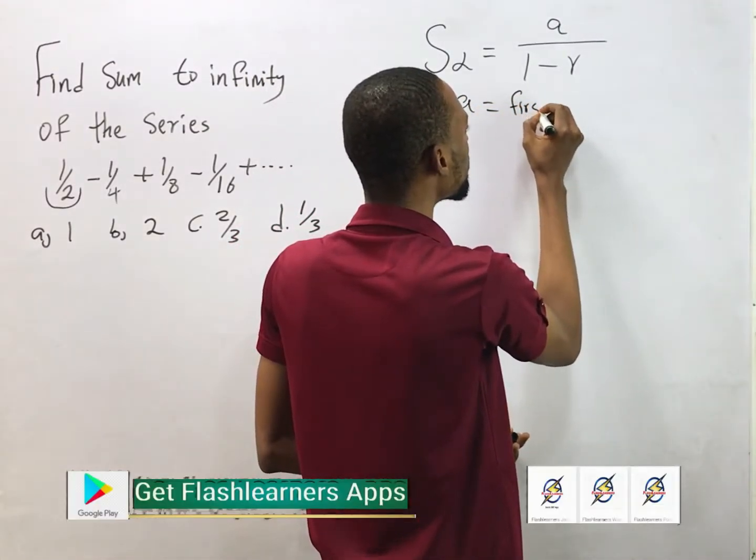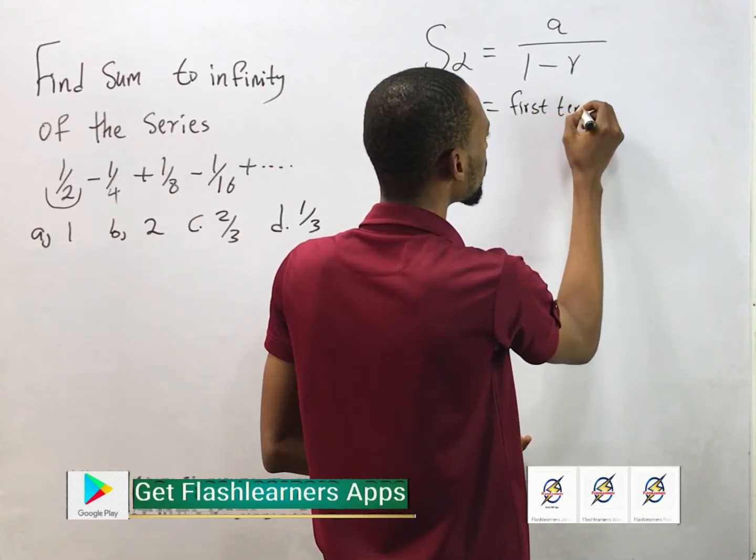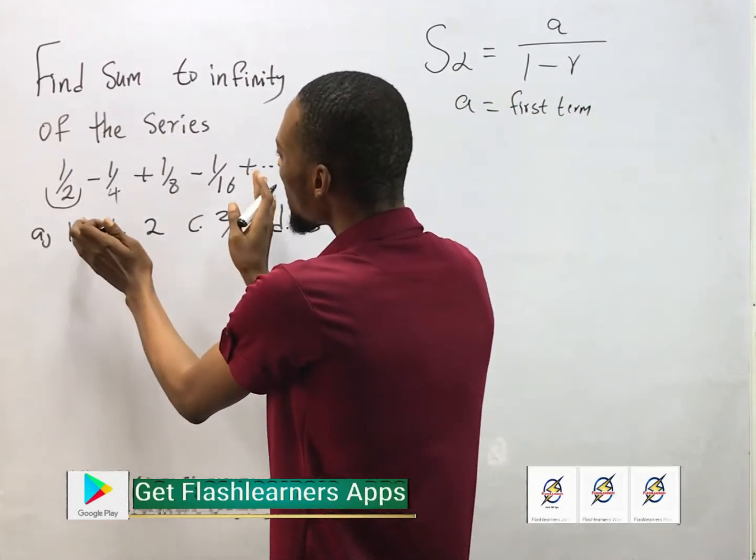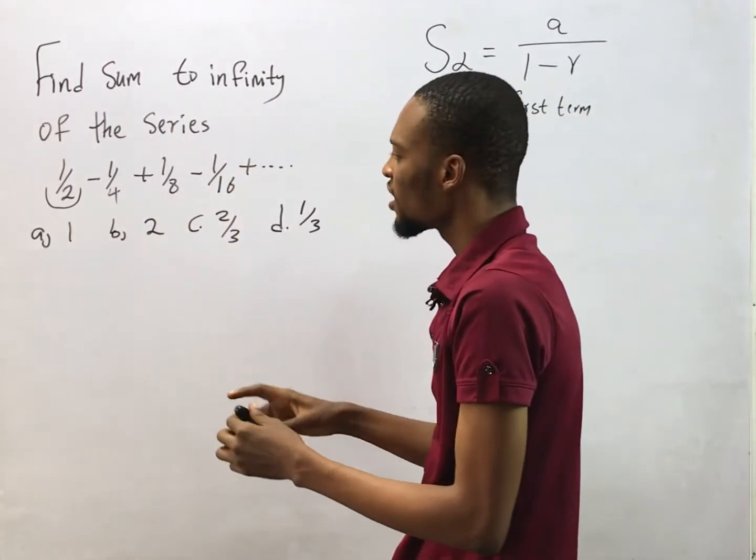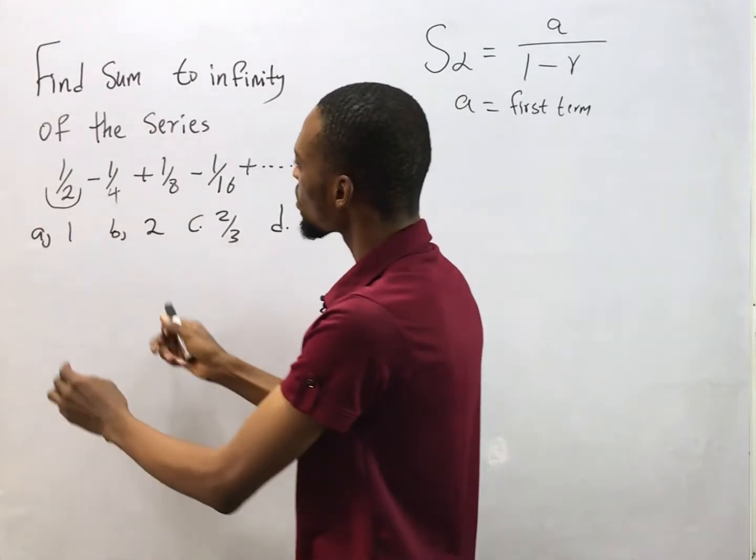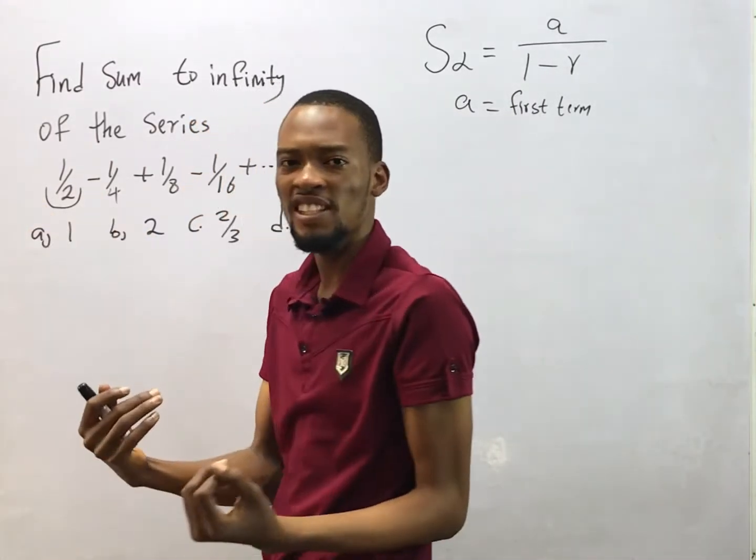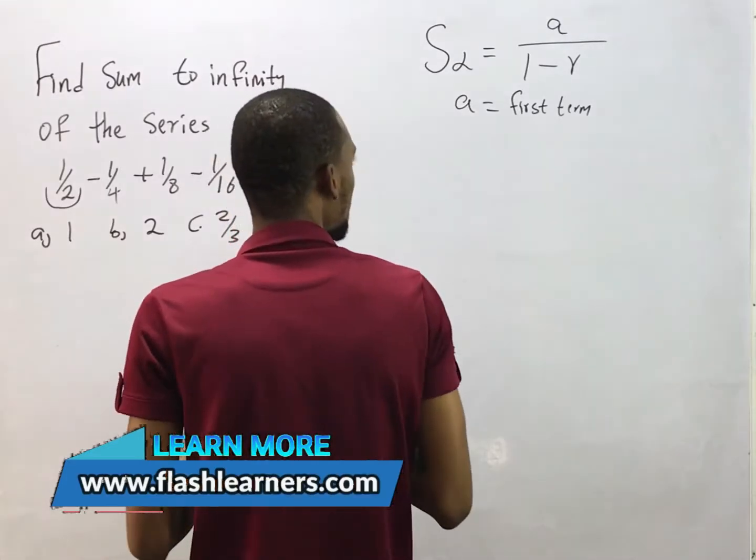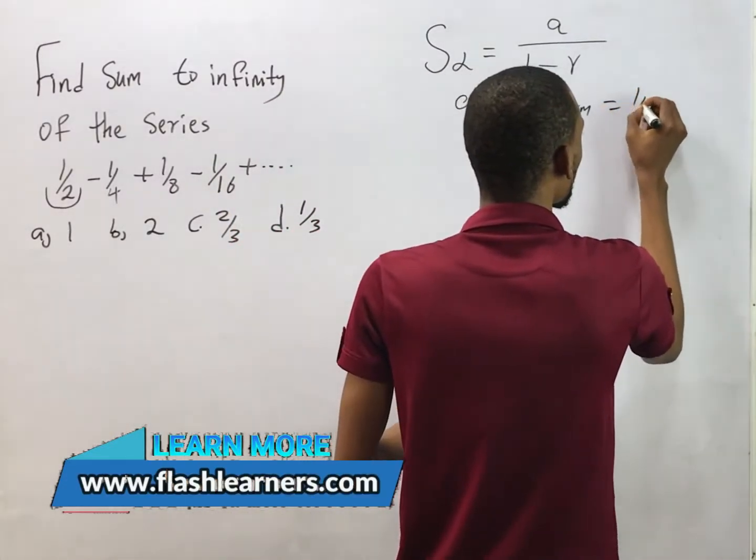the first term. The first term that appeared in this series - in this series the first term is obviously 1/2. This is the first thing that appeared, so we simply say a equals 1/2.